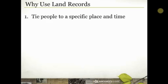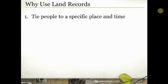Here are some of the reasons why we use land records in family history. The first is to tie people to a specific place and time — just as we use census records for that same purpose. Sometimes those census records aren't available. Land records go back much further than the census, and especially before 1850 — the first census listing every household member — land records can help us reconstruct families in ways we might not otherwise be able to.